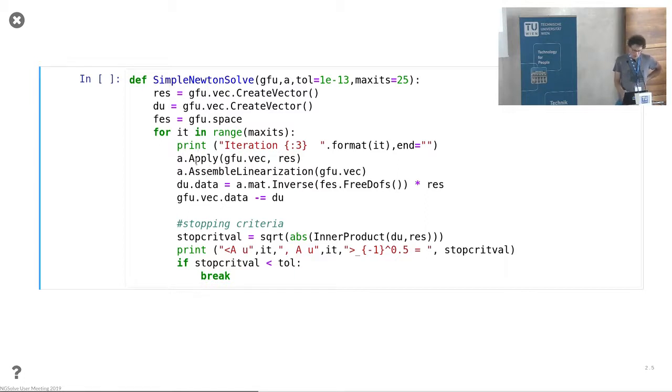You have a number of iterations. First, you need to evaluate your form given your argument. You have essentially just linear form left if you replace the u's with your current values gfu. This is the apply operation and then there is the assemble linearization which allows you to linearize your form around the linearization argument. Then you solve for the linearized system and update in the Newton's method.